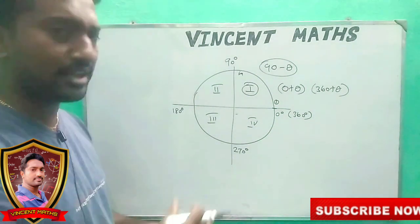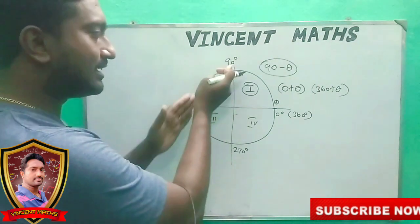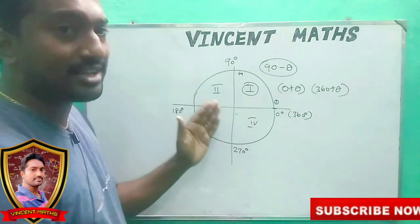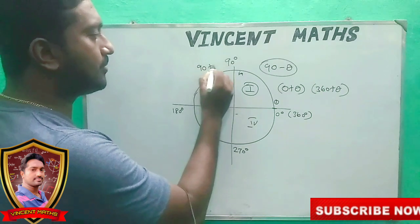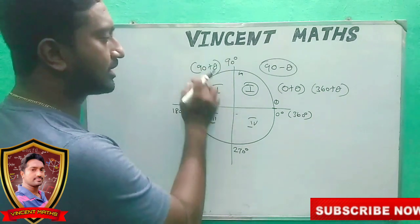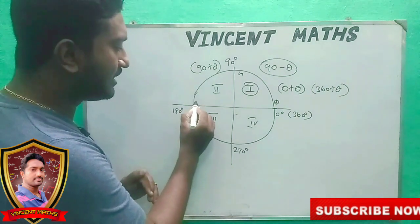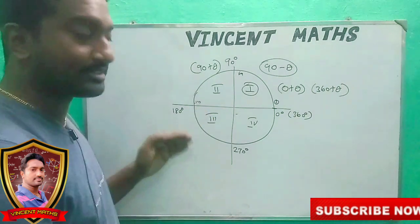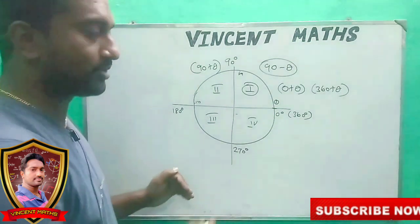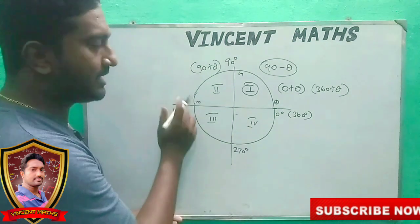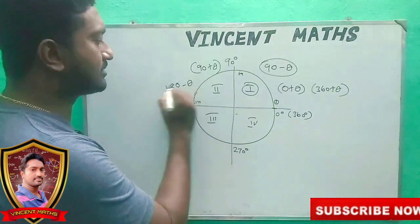If you look at the left side of the video, when it is 91 then it is 90 plus theta. If you look at the second quadrant, when it is 179 then it is 180. In the second quadrant, it is 180 minus theta.